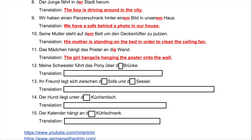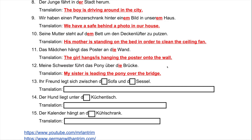Number twelve: 'Meine Schwester führt das Pony über ___ Brücke.' 'Führen' means to lead. The thing being led is 'das Pony.' We are leading it over the bridge — it wasn't on the bridge before; we're taking it from one side to the other. That uses the accusative case. 'Brücke' is feminine, so 'die Brücke.' Answer: 'Meine Schwester führt das Pony über die Brücke' — my sister is leading the pony over the bridge.